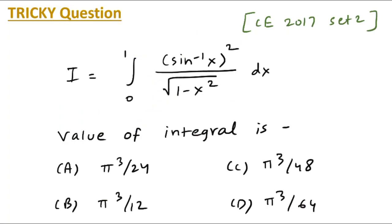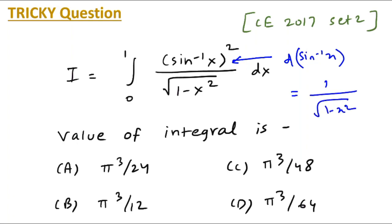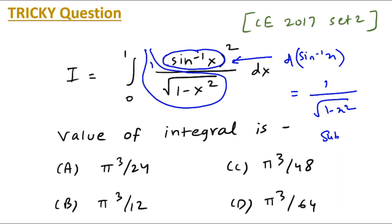When you look at the numerator you can see the function sine inverse x, and if you think of the differentiation of sine inverse x, it is 1 upon root(1 minus x squared). So you can relate these two things: my function is sine inverse x and its differentiation appears in the denominator as 1 upon root(1 minus x squared). This suggests substitution — think of substitution and you will get the answer.